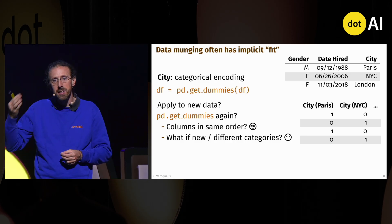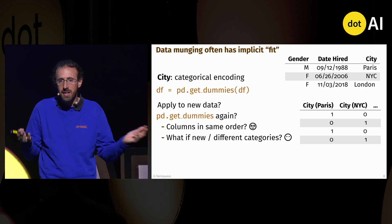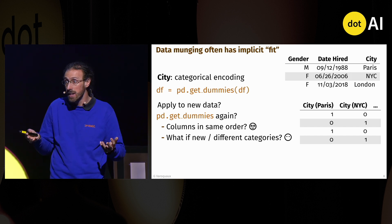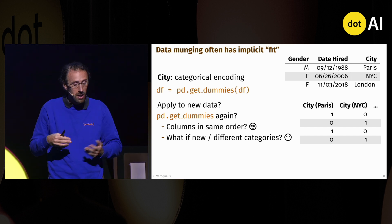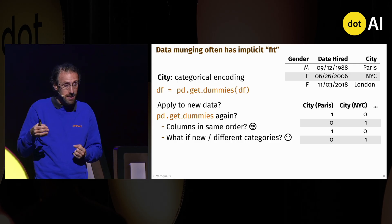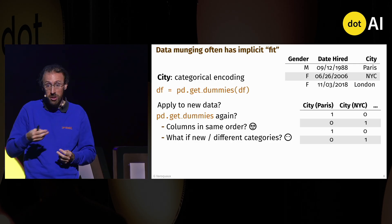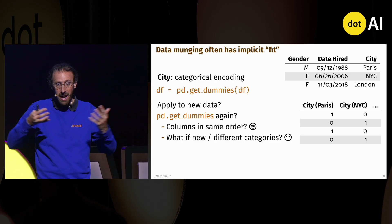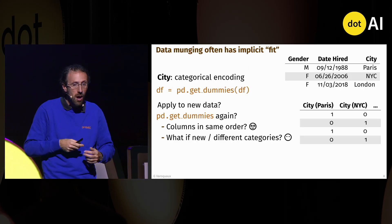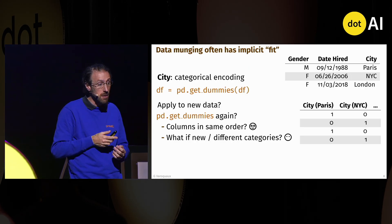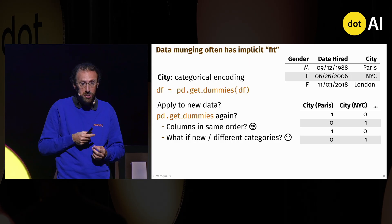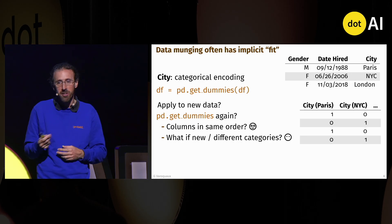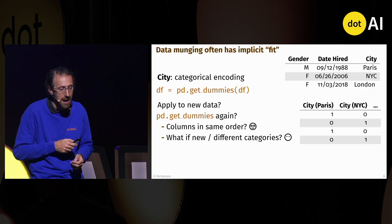What happens when we get new data with an unseen city? How do we represent it? If we rerun pandas.get_dummies, it's just going to create a new column. But then how do we align this new column with the old one? Are we certain we get the columns in the same order? We can't apply get_dummies on the train set and then the test set — that's really bad.